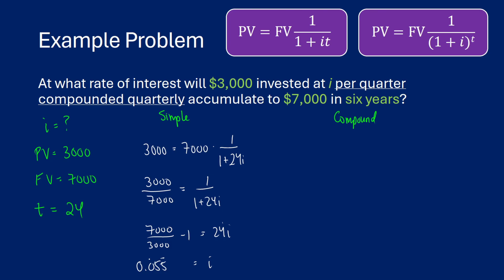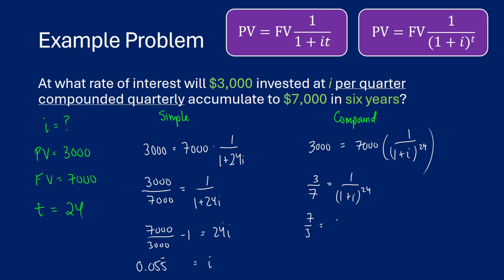For compound interest: $3,000 equals $7,000 times one over one plus i raised to the 24th. Simplifying, three-sevenths equals one over one plus i to the 24. Flipping gives us one plus i to the 24 in the numerator, then we take the 24th root of both sides. So the 24th root of seven-thirds minus one equals i. Plugging in: seven divided by three raised to the power of one over 24, minus one, gives us i equals 0.0359 — effectively a 3.6% interest rate with compound interest.